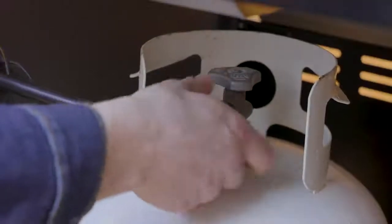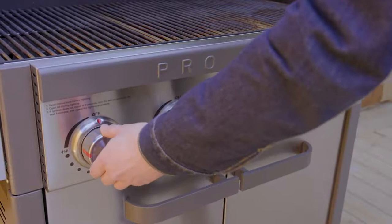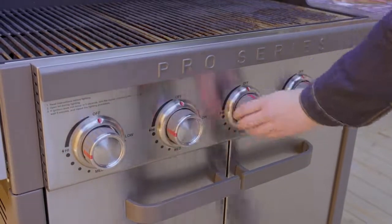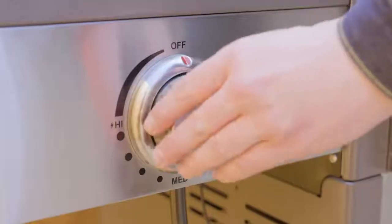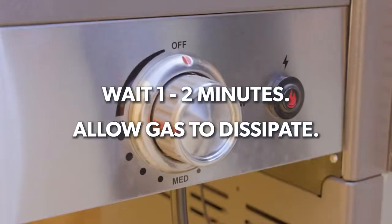Disconnect the regulator from the LP cylinder. Open all control knobs, including the side burner, to the high position and let it stand for one to two minutes, allowing all excess gas in the gas manifold to dissipate.